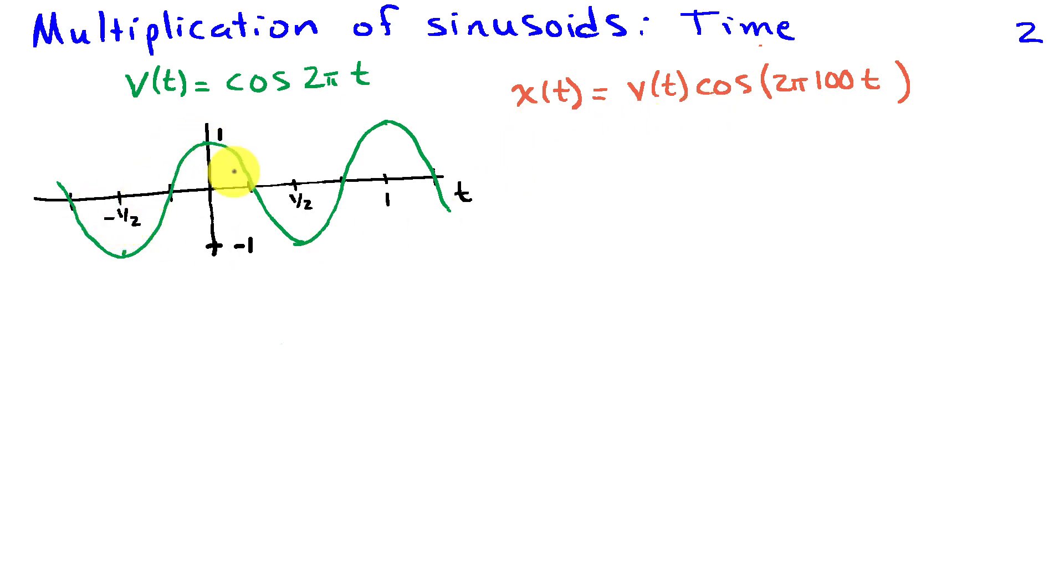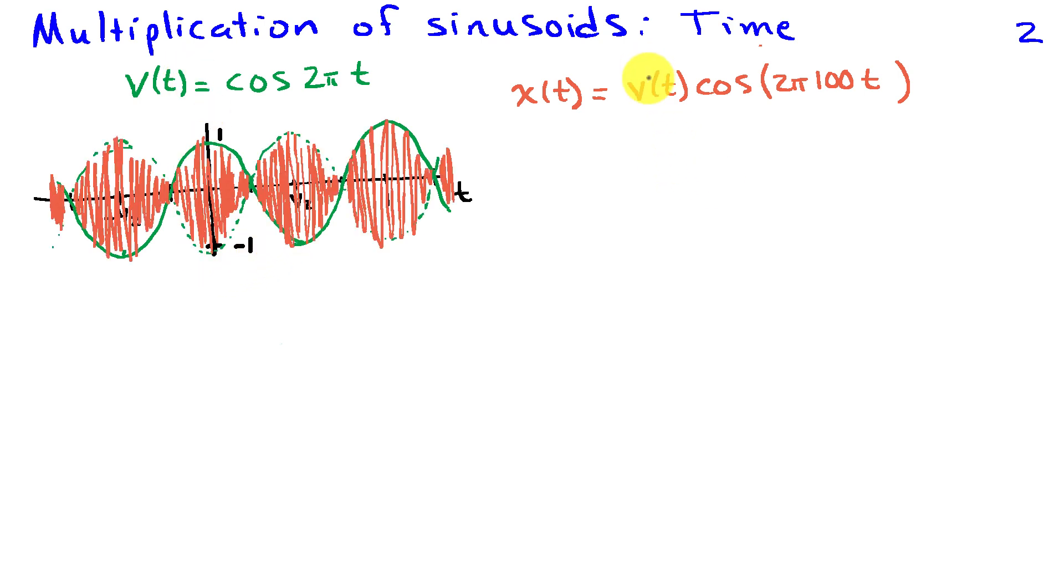I've drawn a graph of v of t and the amplitude goes from plus to minus 1 and it repeats every second. Now when I draw the product of v of t times cosine 2 pi 100 t, because the cosine with frequency 100 Hz oscillates so much faster than v of t, the fast oscillations in orange are associated with 100 Hz. And then the amplitude of those oscillations ends up being modified or modulated.